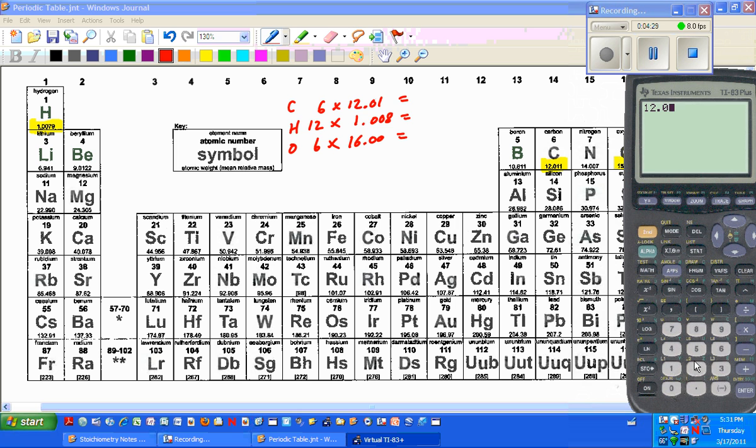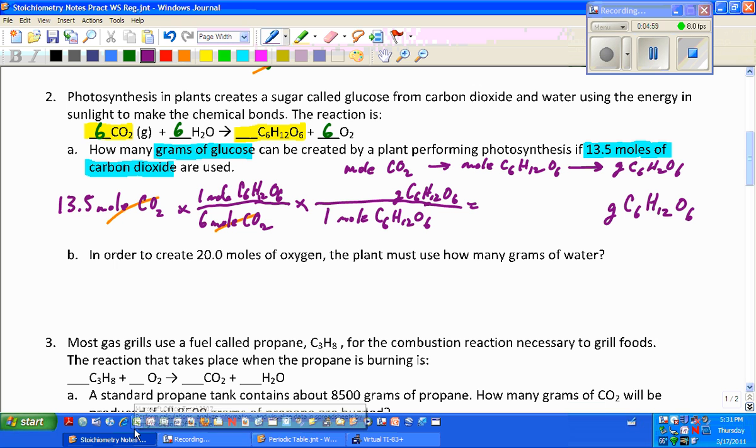So I'm going to have 12.01 times 6, and then I'm going to add 12 times 1.008, and then I'm going to add 6 times 16, and it's 180.156, so it's 180.156 grams.